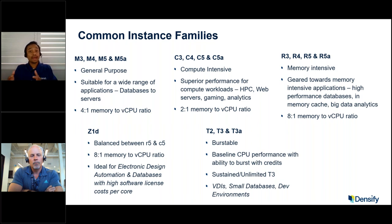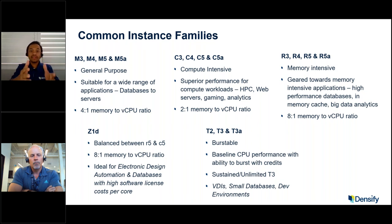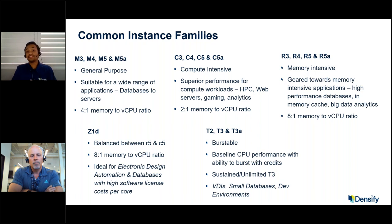What if you have a workload that's more computationally intensive? Maybe you're running high-performance computing, a web server with a huge computing demand, gaming, or analytics. Then you want something with more compute power. The C3, C4, C5, and C5A are more geared for this purpose. They have a 2-to-1 memory-to-vCPU ratio and deliver superior compute performance.